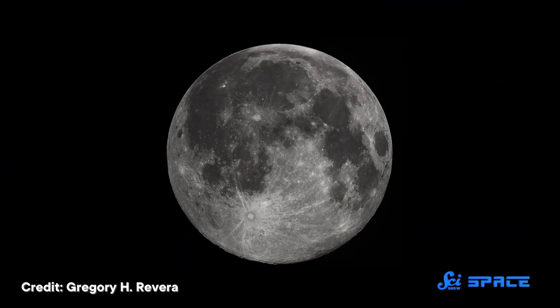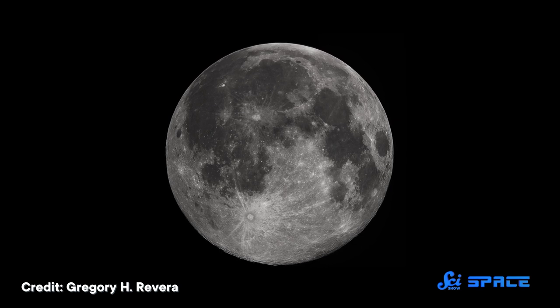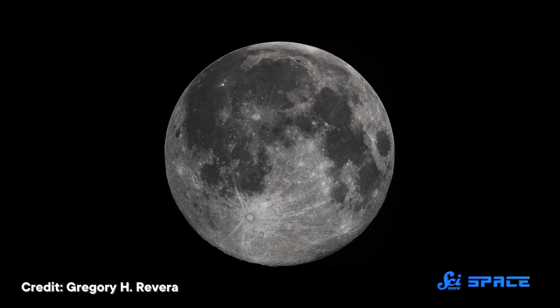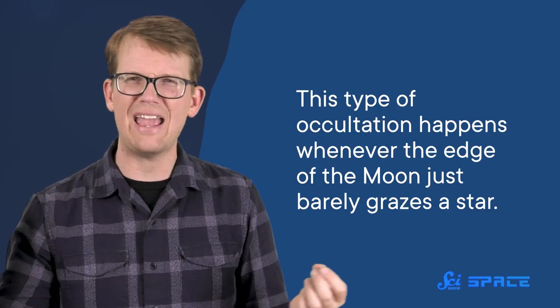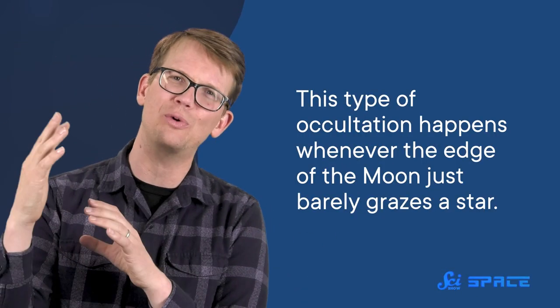Scientists have also used occultations to study the Moon. Starting in the 1930s, British astronomers became interested in using what's called a grazing lunar occultation to study the Moon's geography. This type of occultation happens whenever the edge of the Moon just barely grazes a star. From our perspective, I mean. Like, it doesn't literally graze a literal star. If that happened, we would have big problems.